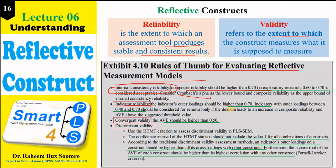For indicator reliability, the loading of every indicator should be equal to or higher than 0.7 to keep it. In some cases, if the loading is less than 0.7 but higher than 0.4, you can retain it. However, if removing an indicator with loading less than 0.4 helps achieve the overall reliability of the construct, you should remove it. If the loading is even less than 0.4, you should outright consider removing it from your model.